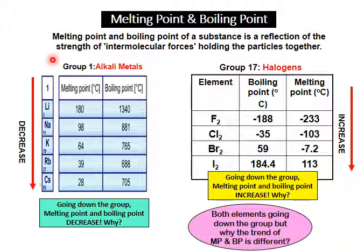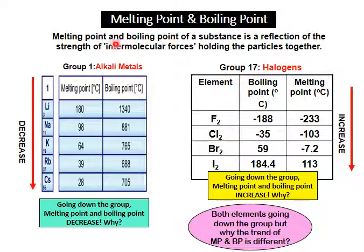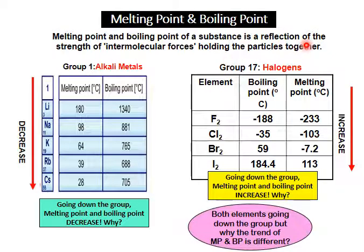What is melting point? Melting point is a process where solid changes to liquid, and boiling point is the process where liquid changes to gas. Melting point and boiling point of a substance is a reflection of the strength of intermolecular forces holding the particles together. If the strength is strong, it needs a higher boiling point or melting point to break down the bond.